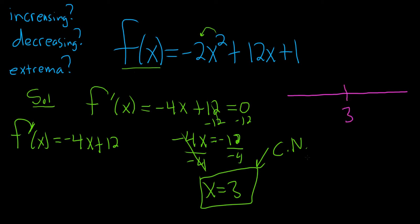Now you pick test points. So you pick any number you like that's smaller than 3. How about 0? So f prime of 0. And you plug those points into the derivative. So this will be negative 4 times 0 plus 12, which is 0 plus 12, which is 12. So that's positive. So because the first derivative is positive, our function is increasing here.